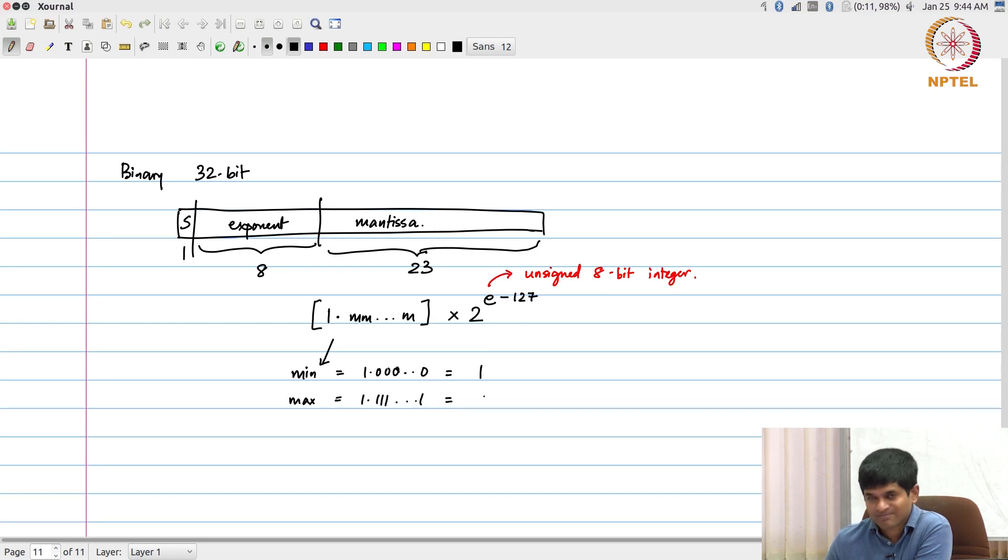And the max value is going to be equal to 1.111, which is 2 minus 2 to the power minus 23, which is approximately equal to 2, some 1.99 something.